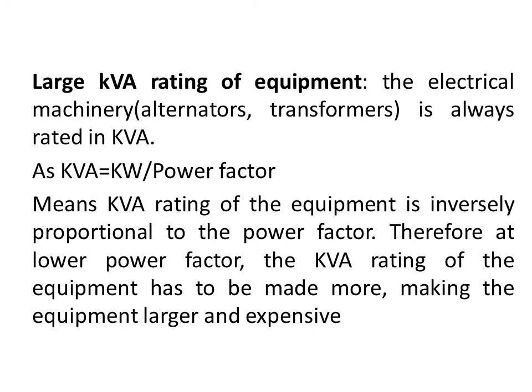Next is the large kVA rating of the equipment. Electrical machinery like alternators and transformers are always rated in kVA. At the time of manufacturing we don't know the power factor — it depends on the type of load connected. Since kVA equals kilowatt divided by power factor, the kVA rating of the equipment is inversely proportional to the power factor. If it is a low power factor, the kVA rating of the equipment will have to be made larger, meaning the equipment will be more expensive and physically larger for the same kilowatt power delivered.